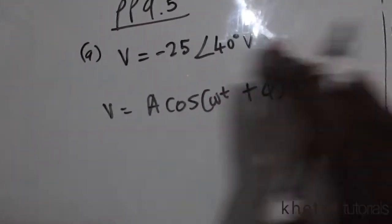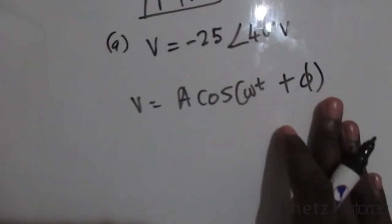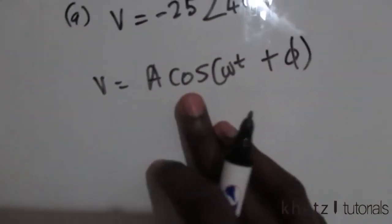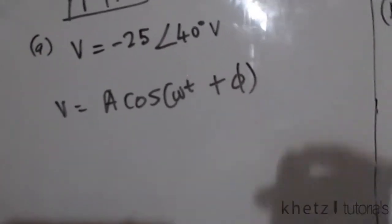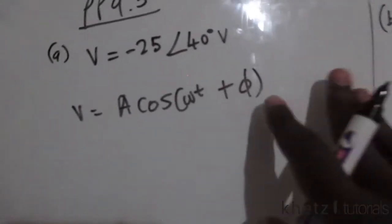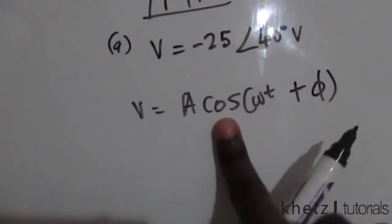So a sinusoid is of the general form A cos(ωt + φ), where this is the phase, this is the angular frequency, this is the time, this is a trig function cosine, and this is the amplitude.